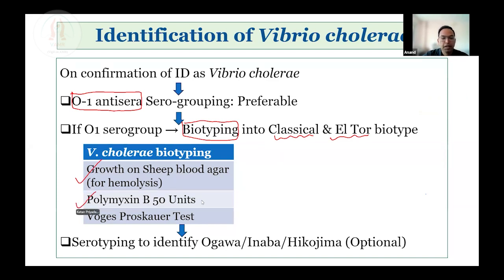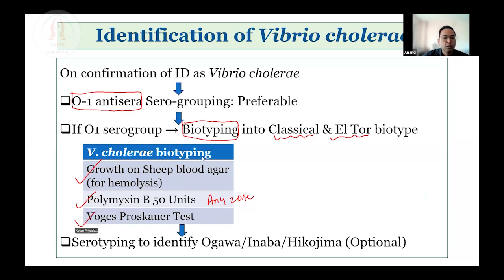Polymyxin B 50 units: any zone size is considered as sensitive. El Tor is susceptible and Classical is resistant. The Voges-Proskauer test: El Tor is positive and Classical is negative. This biotyping is applicable only when the isolate is confirmed as O1 serogroup. For other serogroups and non-cholerae groups, this is not applicable.